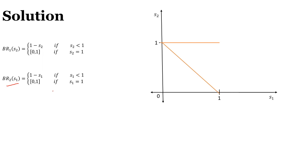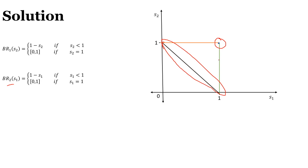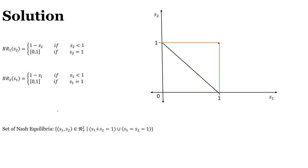The points where the best response functions intersect are the Nash equilibria. The best response for player two overlaps with that of player one along a portion. The green line is the best response for player two and the orange line is for player one. They also intersect at the point (1,1). Writing in set form, the Nash equilibria are: the set of (s1, s2) in R2-plus such that s1 plus s2 equals 1, union the point s1 equals s2 equals 1.